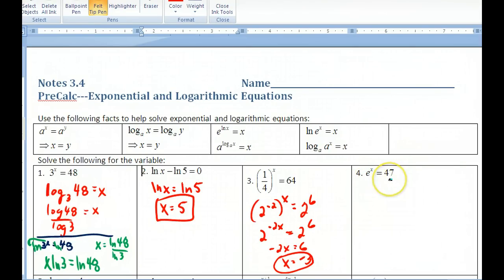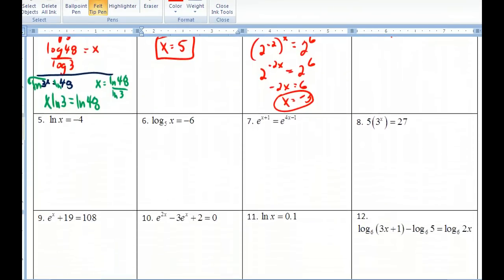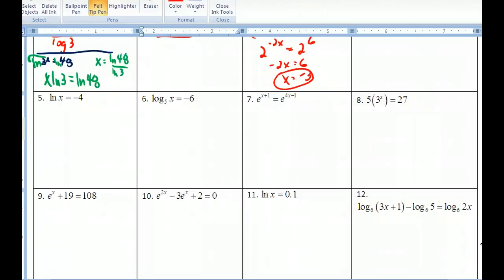e to the x equals 47. You can take the log of both sides or rewrite it in log form. But in this case, since the base is e, you probably don't want to use regular log with base 10. So if I rewrite this, this would be ln of 47 equals x. Remember, logarithm is the exponent. Type that in your calculator, get it to 3 decimal places. The next one, it's in log form and you want to solve for it. So maybe you want to take this and put it in exponential form. So it's ln x, and remember that this is implied to be base e. So it's e to the negative 4 equals x.